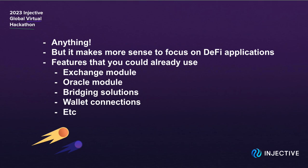Why is that? Because Injective has plenty of plug-and-play primitives and features that you can already use out of the box surrounding DeFi. For example, the powerful exchange module is where the unique on-chain matching engine logic and order book exists. So if you are building a DEX, you can already use this exchange module out of the box. Or if you are building other products such as a trading bot or even a payment product, you don't have to worry about integrating with another external exchange or liquidity provider — you can just tap into the liquid markets that already exist in the exchange module.